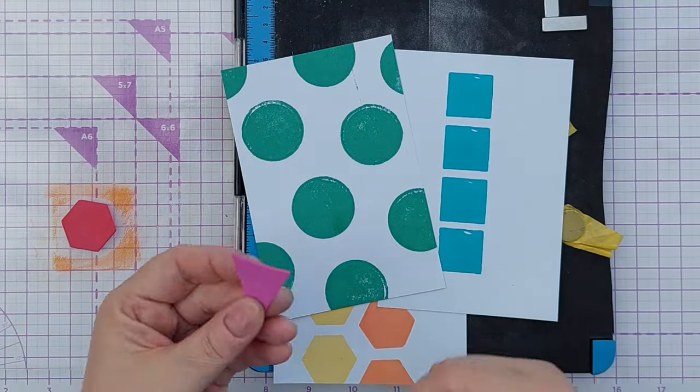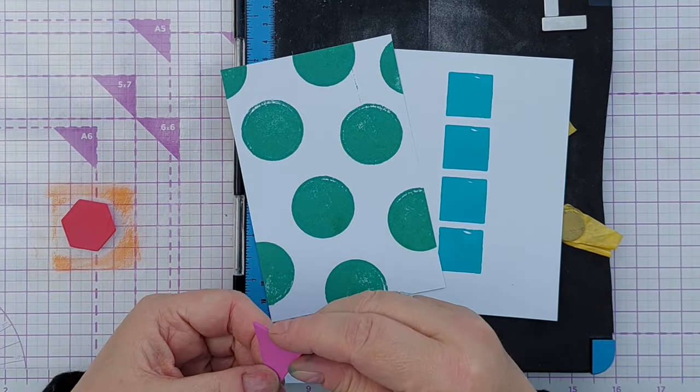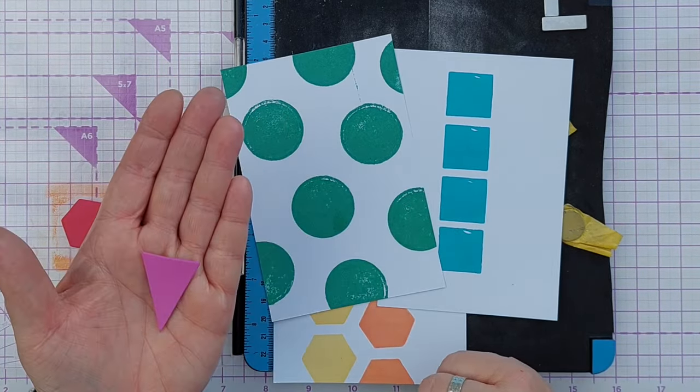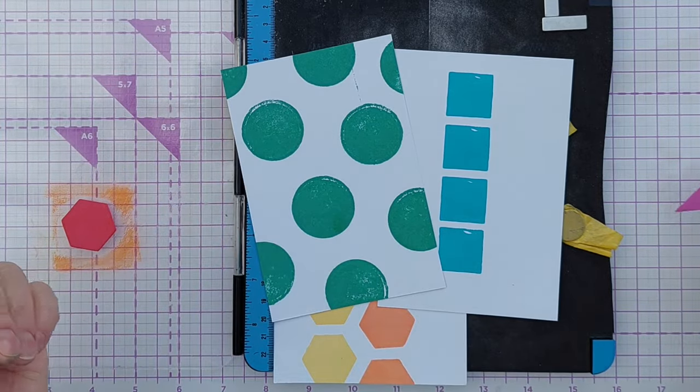Later in the series we'll be looking at triangles. We've actually been making bunting, spoiler alert, using triangle stamps. So you could cut yourself some triangular fun foam bunting shaped stamps.